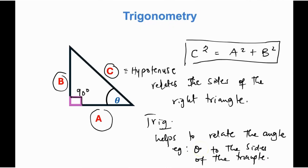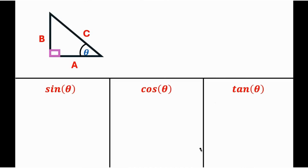Basically, that is what trigonometry is all about. In most cases you will use the Pythagorean theorem to find one of the sides of the right triangle, then use trigonometry to relate two sides of the triangle to one of its interior angles.